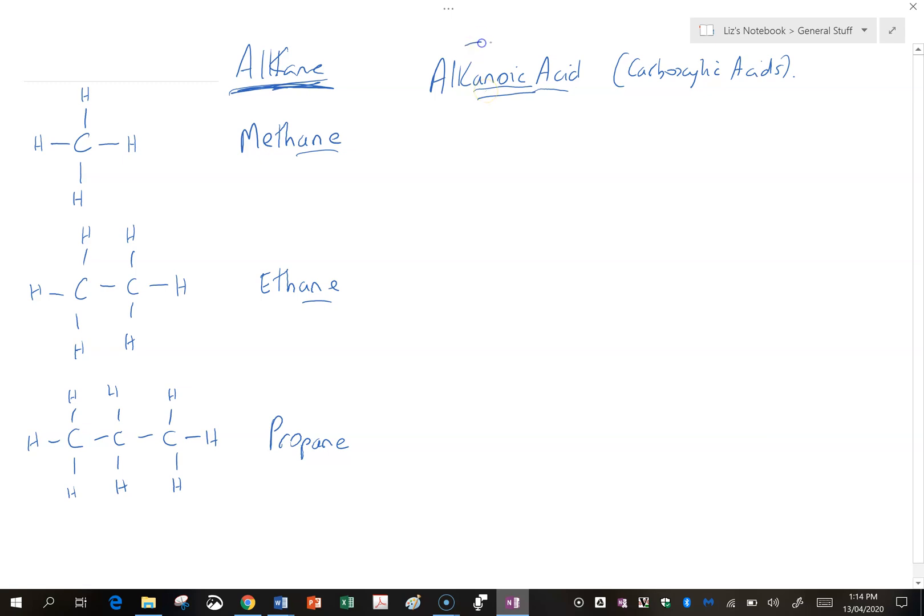Now an alkanoic acid has a functional group we call COOH. It's drawn out as C-O-O-H. This is the functional group, just like the OH was a functional group of an alcohol. When you see the OH with the C double-bonded O beside it, you know you're dealing with a carboxylic acid.